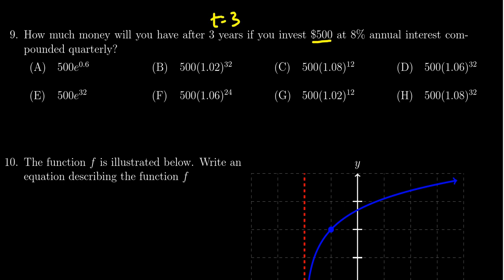If you invest $500, that sounds like principal, at a rate of 8% annual interest rate. So this is our interest rate there at 8%, and then it's compounded quarterly. So that means n equals four.